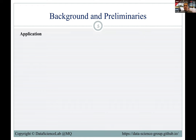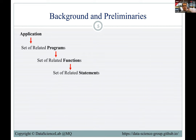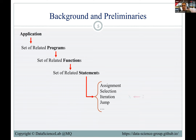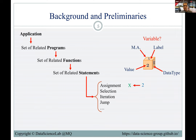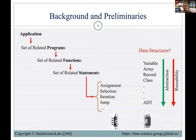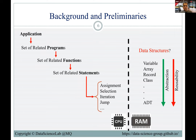To be on the same page, I'll quickly discuss some background. An application is a set of programs, a program is a set of related functions, and a function is a set of related statements — including assignment, selection, and iteration. The simplest is assignment: assigning a value to a variable. Any data-centric application requires data structures, from simple variables to more abstract and reusable structures like ADTs — abstract data types. These structures live in main memory, and statements access this data to generate new information and knowledge, which must then be persisted.